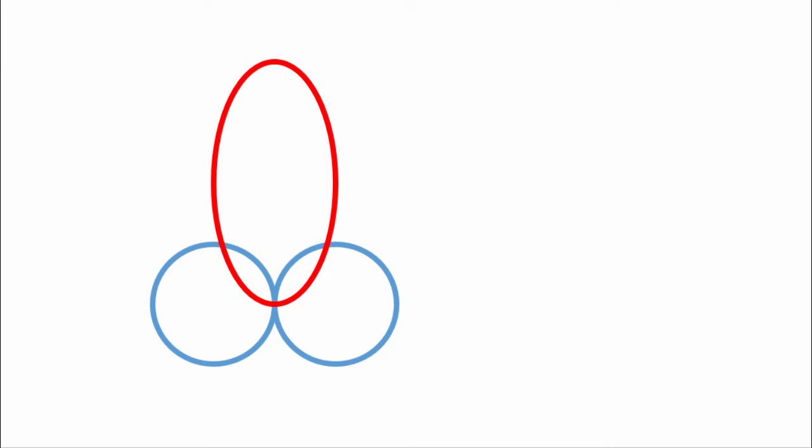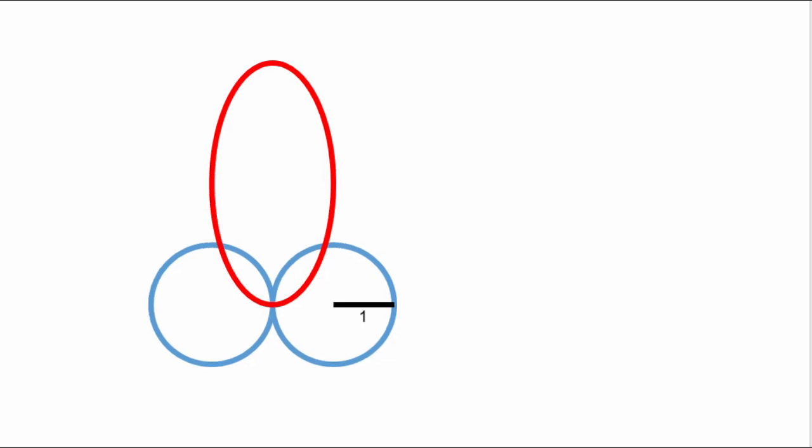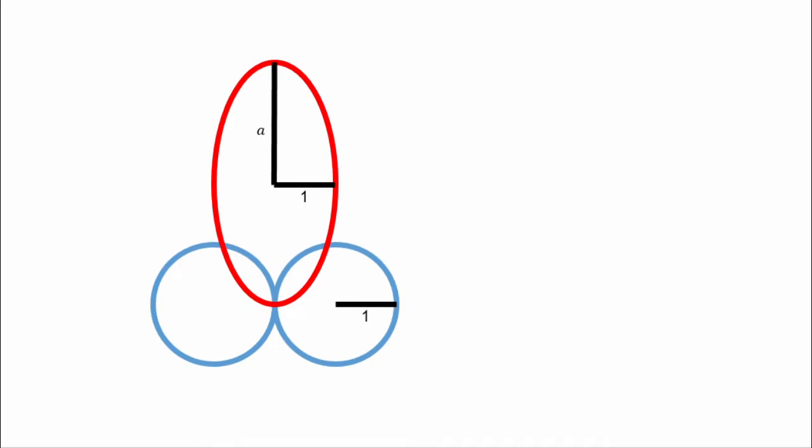So today we're going to solve a problem that goes all the way back to 300 BC in the days of Epicurus. The problem is as follows. Suppose we have this figure here with these two blue balls of radius 1 tangent to each other and this red ellipse here called the shaft with a minor radius of 1 and a variable major radius A. For now we'll assume A is greater than 1.